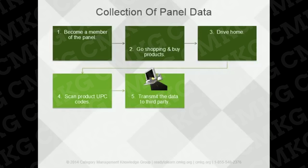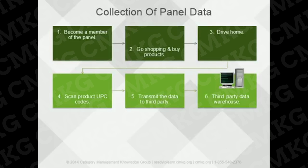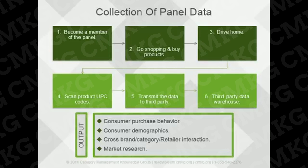This information is transmitted to the third-party data vendor, which ends up in a massive database that is then spun into many different data sources that are all derivatives of the panel data. This includes consumer purchase behavior, consumer demographics, and cross-brand interaction data, and that's just to name a few. Each of these different iterations is for sale to vendors and retailers.